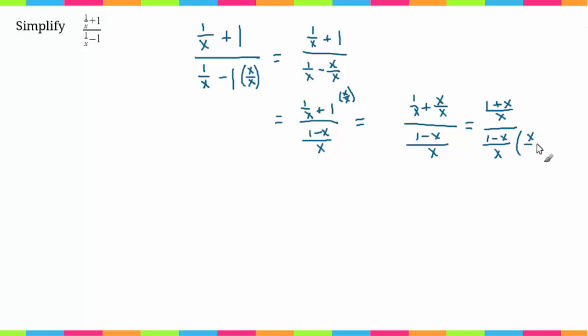Now I'm going to get rid of this denominator by multiplying by x over 1. I'll do the same thing to the top and multiply by x over 1. What's good about that is these x's cancel out, and these x's easily cancel out.